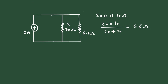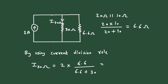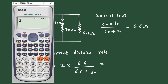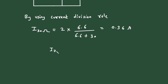Now we can easily find the current through the 30 ohm by using the current division rule. Let us say this is I_30Ω. I_30Ω is equal to the total current of 2 ampere multiplied by the parallel branch resistance 6.6, divided by total resistance 6.6 plus 30. Solving this gives 0.36 ampere. So I_30Ω is equal to 0.36 ampere.